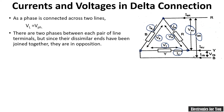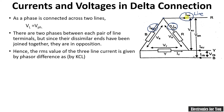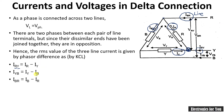Now let's see the relationship between currents. The incoming line current arrives at a node and then divides. Applying KCL and noting the direction of the currents: IRY equals IR minus IY, IYB equals IY minus IB, and IBR equals IB minus IR. These are the phase currents in the delta connection. The relationship between phase current and line current is not straightforward and must be calculated using a phasor diagram.